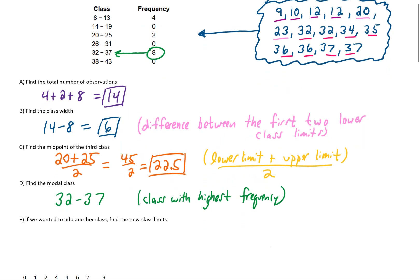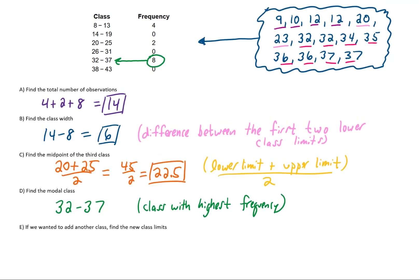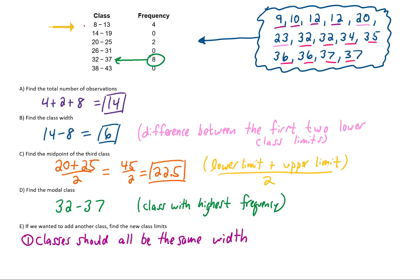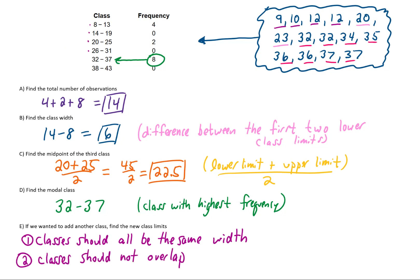Finally, if we wanted to add one more class to the end of this frequency distribution table, what would be the class limits? Two rules to keep in mind: first, all classes in a frequency distribution table should have the same width — going from 8 to 14, 14 to 20, 20 to 26, and so on, each difference is 6. Second, classes should not overlap. The first class ends at 13 and the second starts at 14; the second ends at 19 and the third starts at 20.